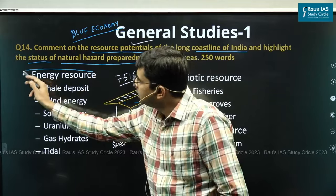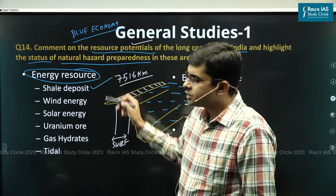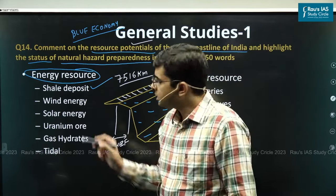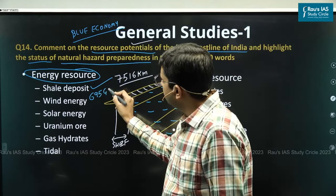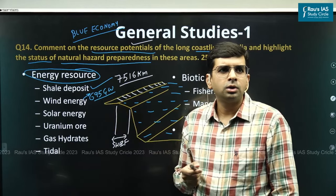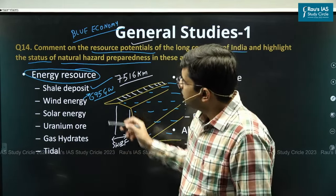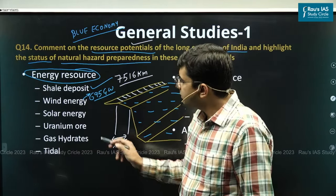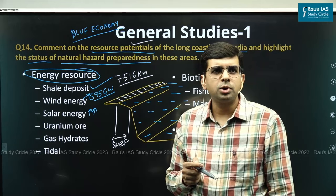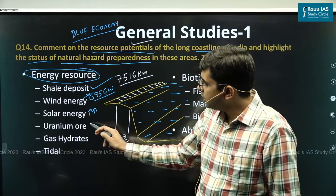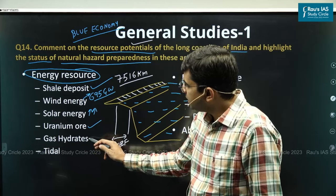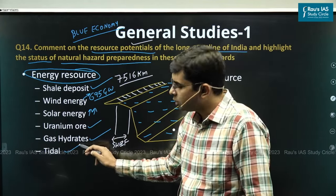What are the different types of resources present at the coastline of India? The first is energy resources. We have proven shale deposits in the Cambay region of Gujarat, Krishna-Godavari Delta region, and Kaveri Delta region. India has 695 gigawatts of wind energy potential, with the majority along the coastline. The tropical coastline also offers strong solar energy potential. According to the Uranium Corporation of India Limited, uranium ore is present particularly along Karnataka's coastline. Methane gas hydrates and tidal energy potential also exist on a large scale.